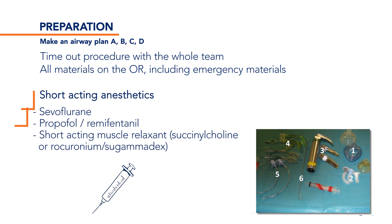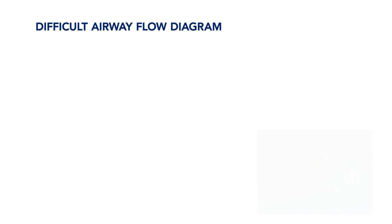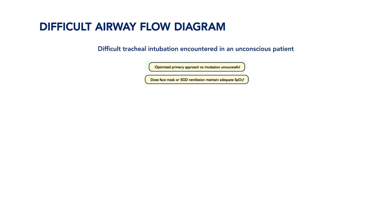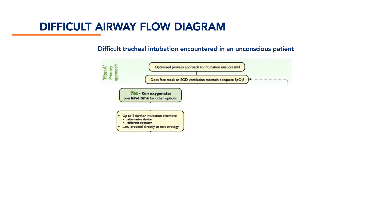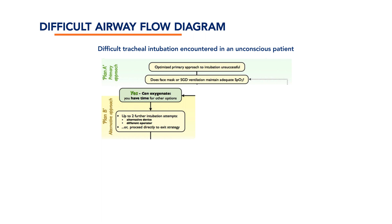Also consider using short-acting anaesthetics. There are many different flowcharts available to aid decision-making when dealing with an acute situation and a difficult airway. When primary approach to intubation is unsuccessful, always keep administering oxygen to the patient. Plan A is to optimise your intubation approach. Ensure whether ventilation through a face mask or supraglottic device is possible. If ventilation is possible, realise that you have time to consider other options — your plan B. It is also vital to communicate with the team that adequate ventilation is still possible. You can try two further attempts at intubation using a different technique or device, or let the most experienced intubator perform the intubation. Remember to have a maximum of three intubation attempts in total before moving to the exit procedures.